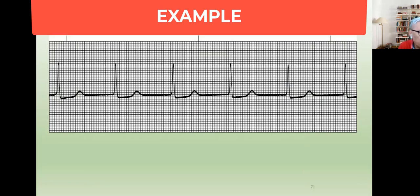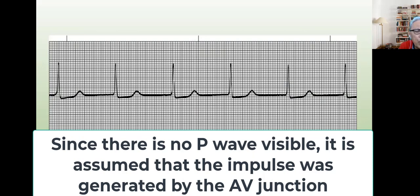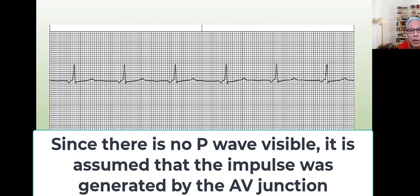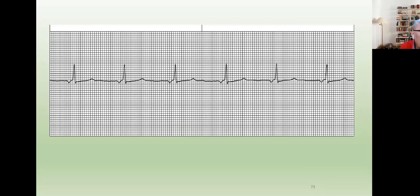If you take a look at this strip, can you find a P wave? So what is our assumption? If we do not see a P wave at all, where did they come from? The AV node. So let me ask you another question. Do you see P waves? So if they're inverted, where are they from?